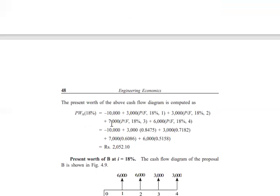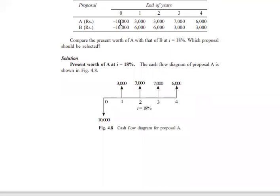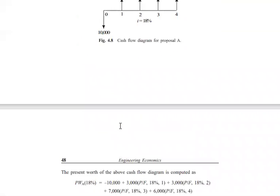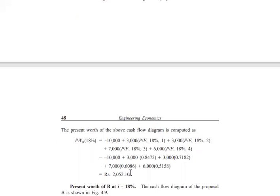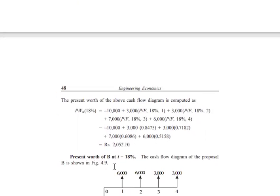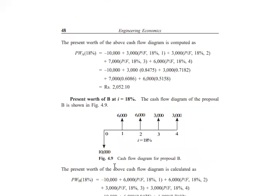The present worth of A is calculated as: -10,000 + 3,000(P/F, 18%, 1) + 3,000(P/F, 18%, 2) + 7,000(P/F, 18%, 3) + 6,000(P/F, 18%, 4). Similarly, the present worth of B is calculated using its respective cash flows at the same 18% interest rate and four-year tenure.